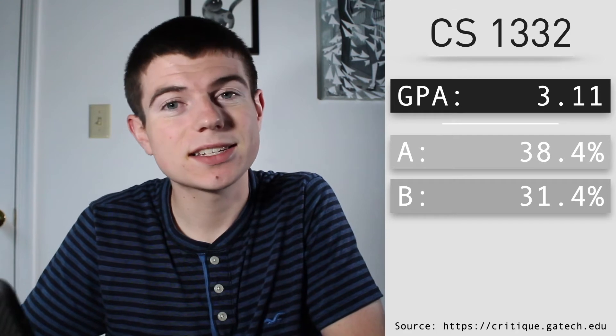Next up is CS 1332, also known as data structures and algorithms. This was a three-credit class that I had on Mondays, Wednesdays, and Fridays from 9:05 to 9:55, with a recitation on Thursday evenings. The average GPA was a 3.11, with 38.4% of students getting an A, 31.4% getting a B, 16.5% getting a C, and 7% withdrawing from the class.